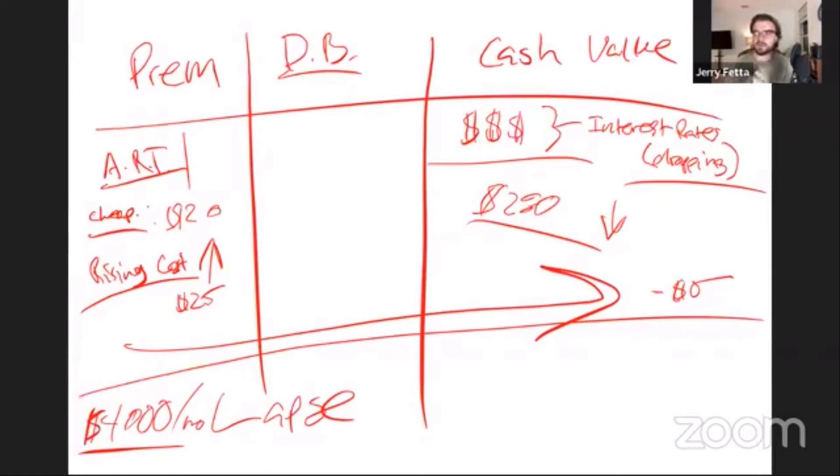The way that we get rid of that is we have a cost that depletes the cash value, which is 100% profit to the insurer, and we make sure that that policy lapses before the insured dies.